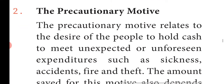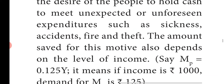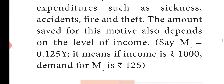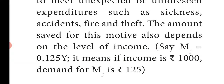That is the precautionary motive. The precautionary motive is the desire to hold cash for unexpected expenses such as accidents or fire. The precautionary motive is equal to 0.125Y. This means if income is 1000, the demand for precautionary motive is 125. Both transaction and precautionary motives depend on the level of income.